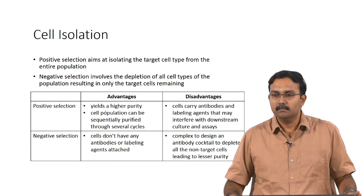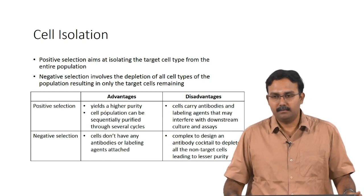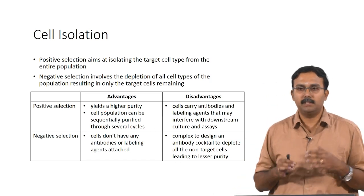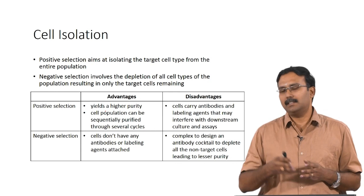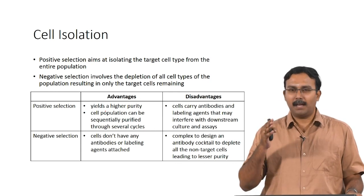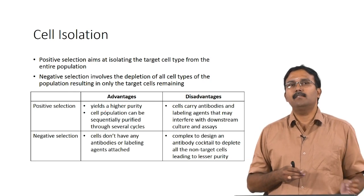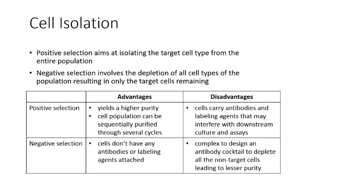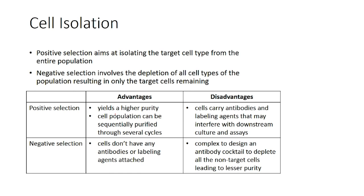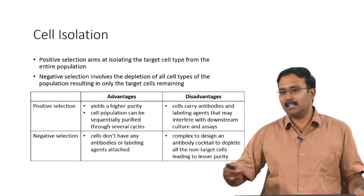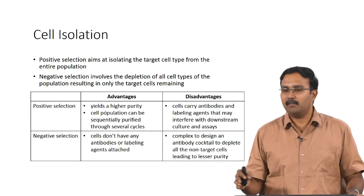People do use selective media as well, similar to how it is done for transfected cells. In the case of transfection, you can have antibiotic assistance — culture the cells in the presence of the antibiotic, every other cell will die and only the transfected cell will survive. But for cells which are just isolated without transfection, it is not very easy to do that.